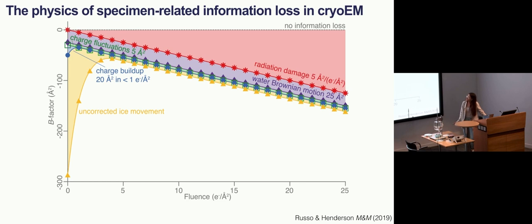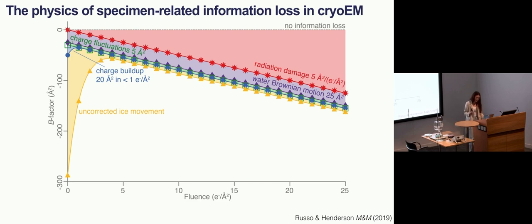This graph summarizes our understanding of all the factors that limit the quality of the images we can acquire in cryo-EM. We talk about quality using the B-factor number — a very negative number is bad and near zero is good. The main contributor to quality deterioration during exposure is radiation damage, which is unavoidable. But what else distorts our images? We have motion of the specimen, which can distort the image at the very onset of irradiation where the specimen is least damaged. We also have charging and charge fluctuations of the specimen.